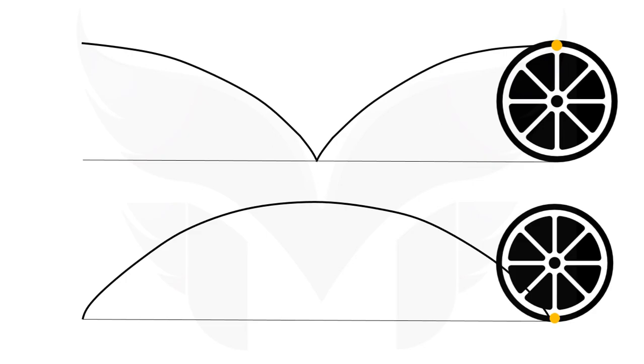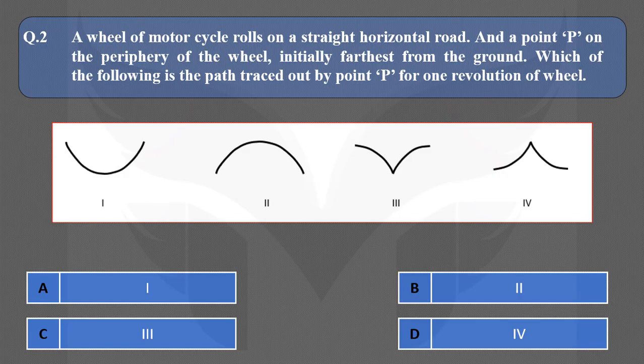Remember this. By looking at the diagram, we can now choose the correct option from the given choices. The correct option is C.